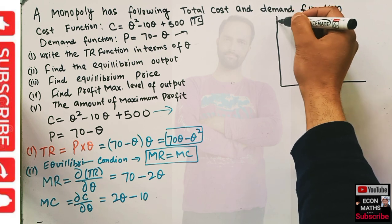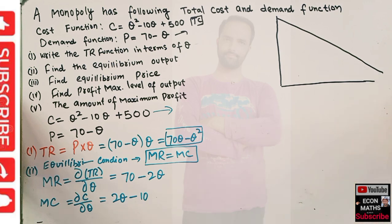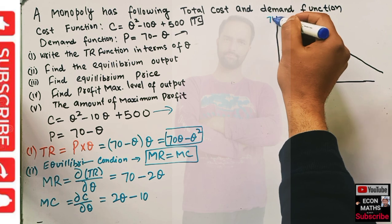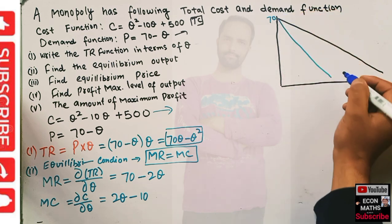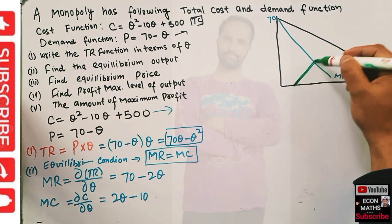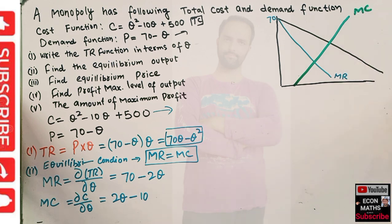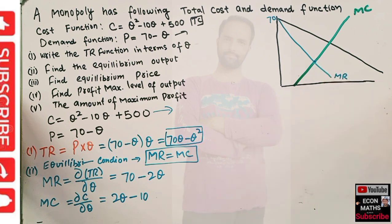We can also show this graphically. We have the demand function — let's call this our demand function. The marginal revenue function has the same intercept of 70, so let's draw this as our marginal revenue function. The marginal cost function is 2q minus 10. Equilibrium requires marginal revenue equal to marginal cost, and the intersection of these two gives us the equilibrium level of output.